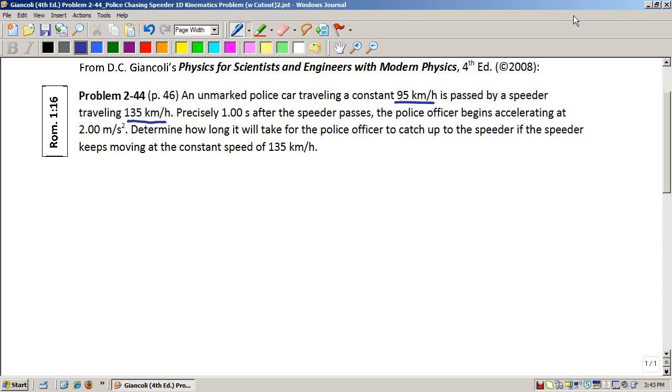We notice that it is an unmarked police car, so the speeder doesn't even recognize that it's a police car that they're passing, and they continue to travel at a constant speed of 135 kilometers per hour. It takes the police officer a second to recognize what's going on, and then they begin to accelerate at a rate of 2 meters per second squared.